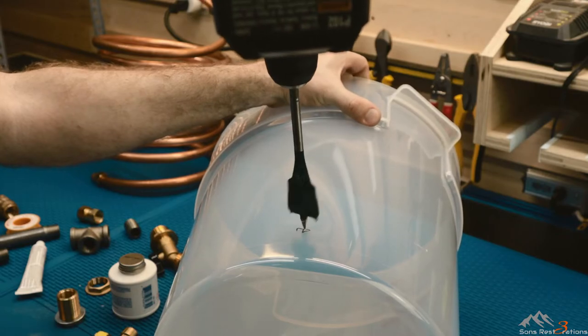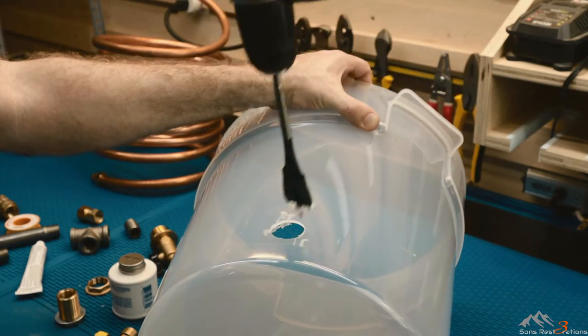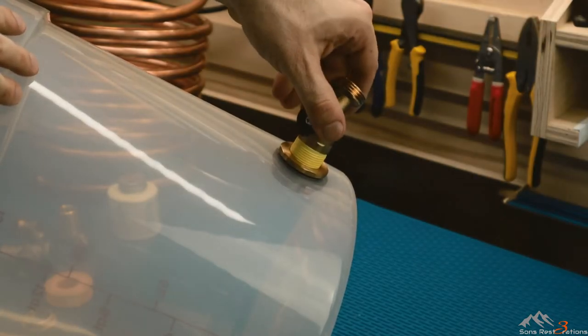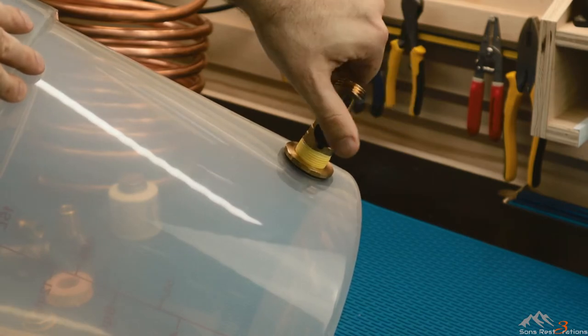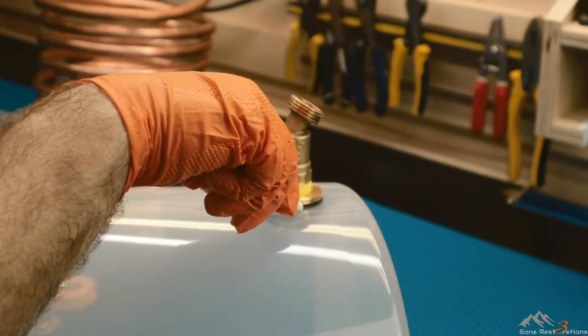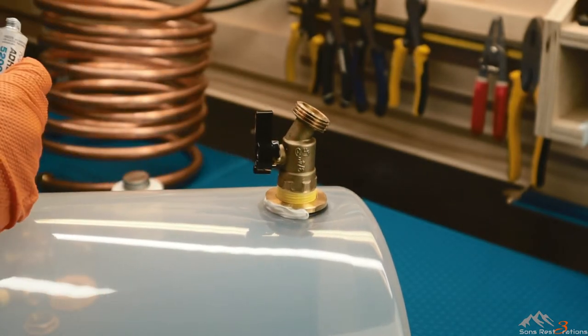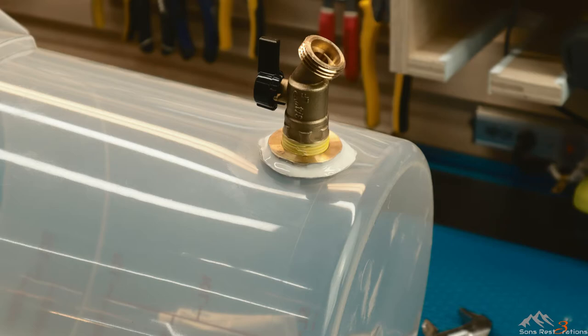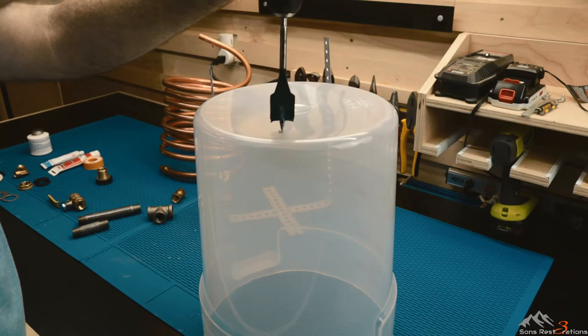Next I drilled a hole in my five gallon bucket in order to allow for water to be drained. The ice water that surrounds the copper tubing will cool the air as it passes through, and I wanted a way to drain this water when the air dryer wasn't in use. The ball valve spigot I used comes with a bulkhead fitting so that I could attach it to the bucket. I use threaded pipe tape as well as some marine sealant around the bulkhead to ensure that no leaks occurred.